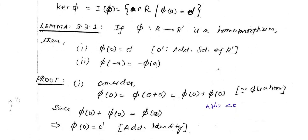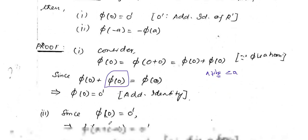To prove the first property, we consider phi of 0, which is rewritten as phi of 0 plus 0, since 0 = 0+0. Because phi is a homomorphism, we can write this as phi of 0 plus phi of 0. So we have phi of 0 plus phi of 0 equals phi of 0. By the cancellation rule, phi of 0 must be the additive identity of the codomain — that is, phi of 0 is 0 prime.